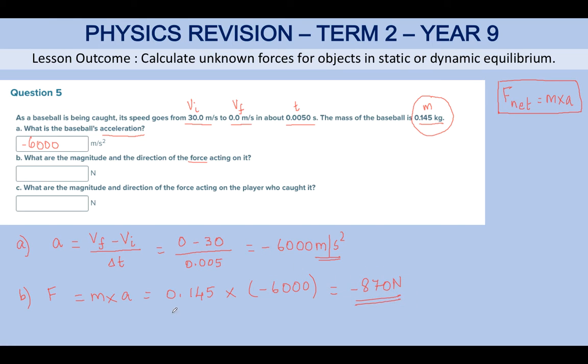These two are straight substitution of the formula, but you need to remember which quantities to substitute first and whether you'll get a positive or negative answer. This is negative 870 N.